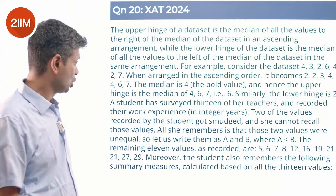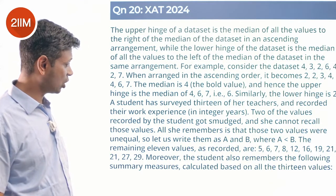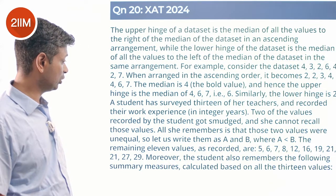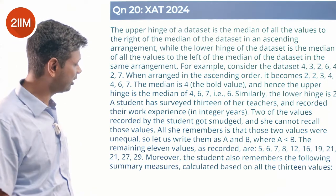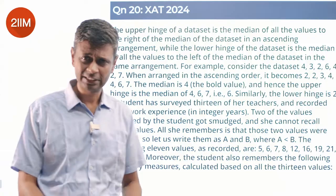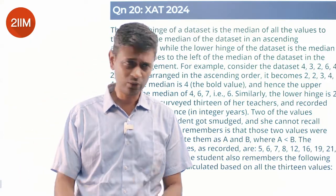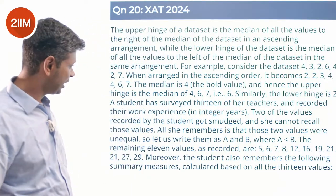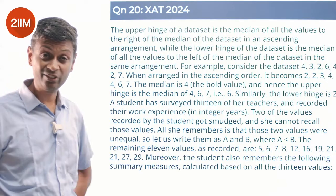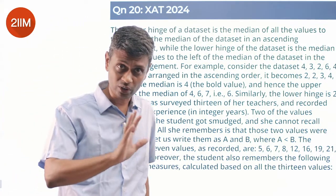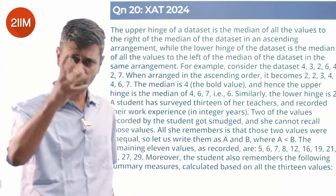Two of the values recorded by the student got smudged and she cannot recall those values. All she remembers is that these two values were unequal, so let us write them as A and B where A is less than B. The remaining 11 values are 5, 6, 7, 8, 12, 16, 19, 21, 21, 27, 29. Nice, they're already arranged in ascending order. 11 different values, and A and B sit somewhere in between.